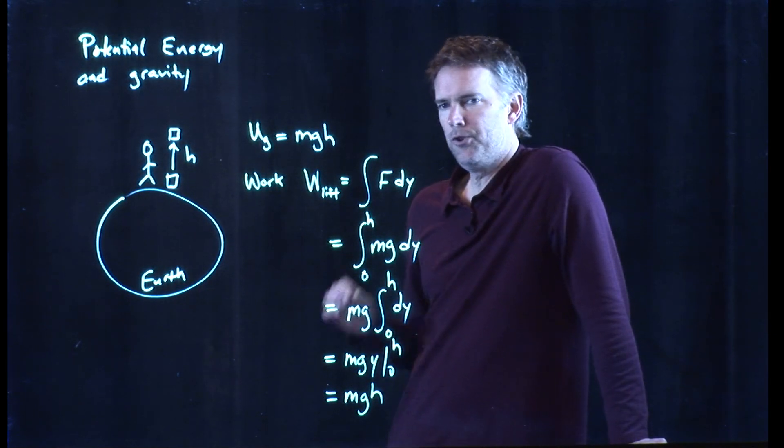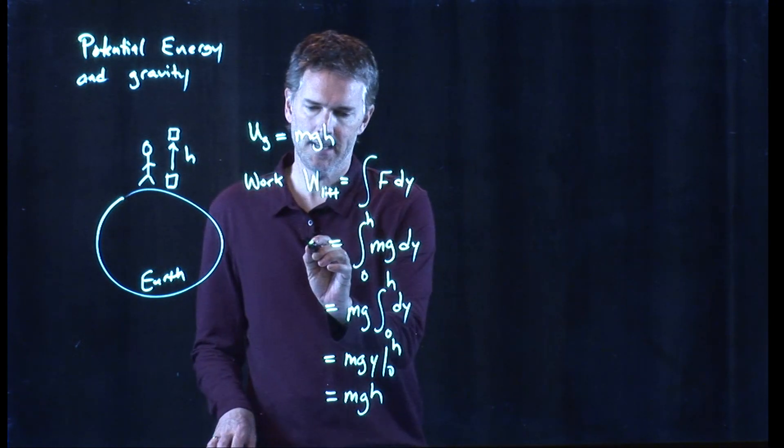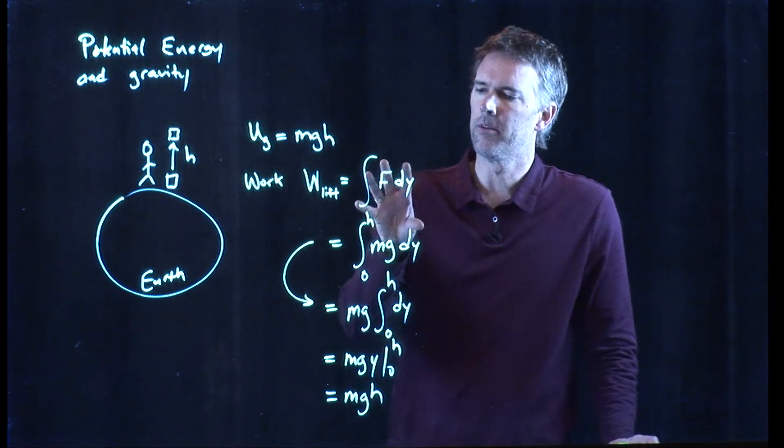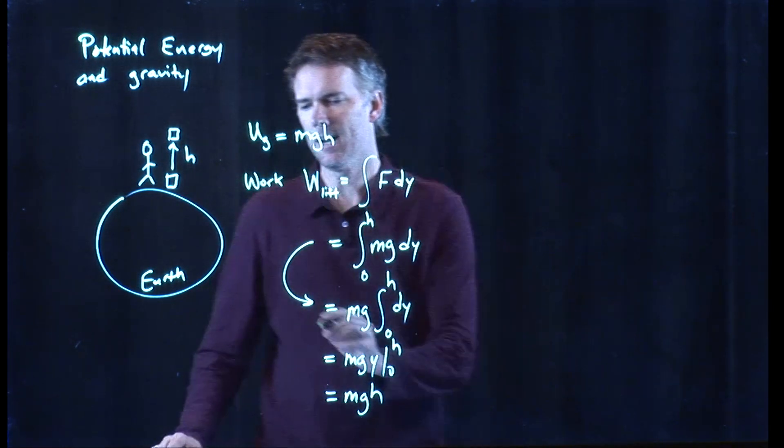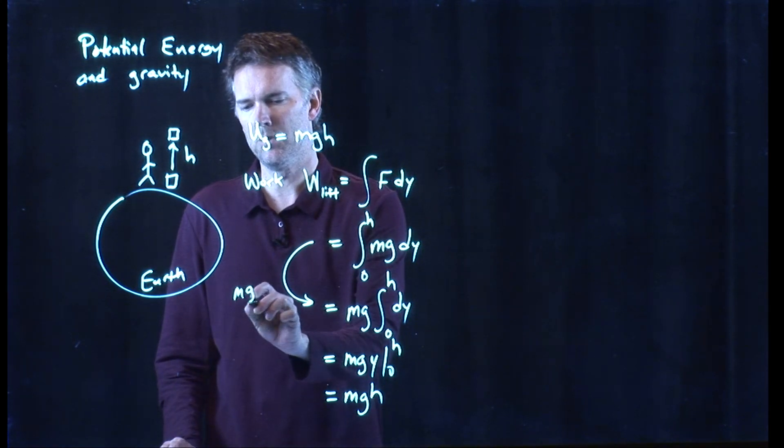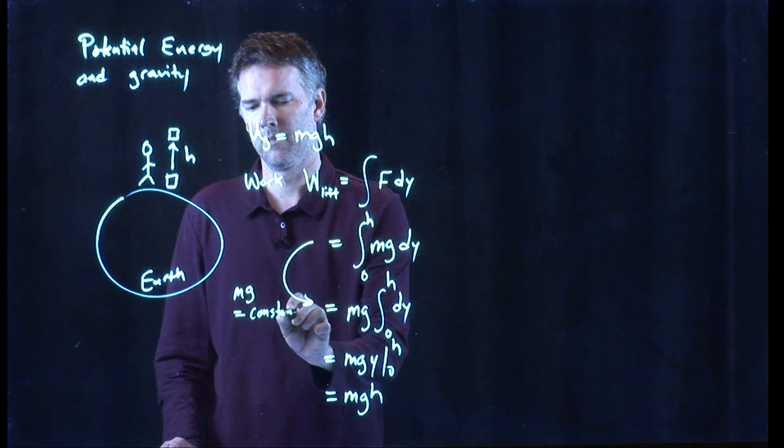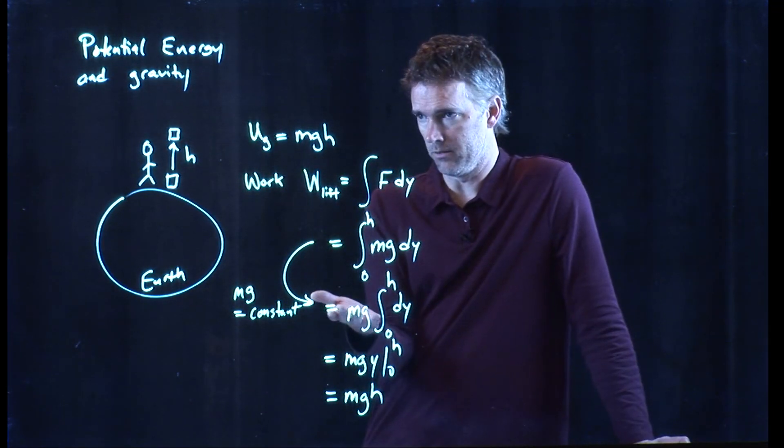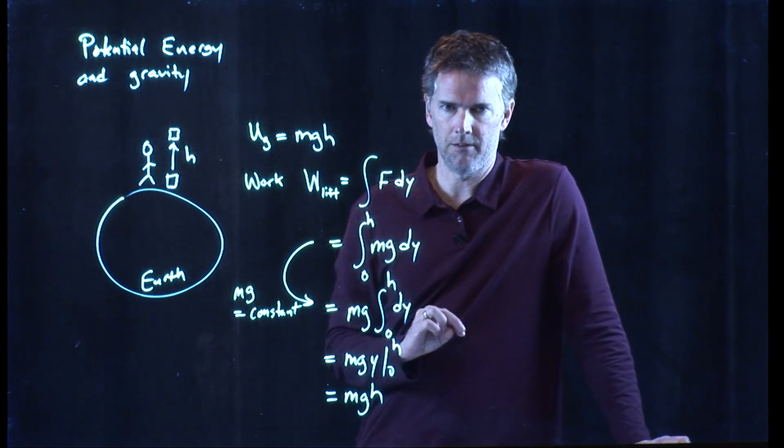But there was a crucial step that we took there. The crucial step was right here. We went from this integral to this step because MGH was constant. And if MGH is constant, it comes out of the integral. You can put it in front of the integral.